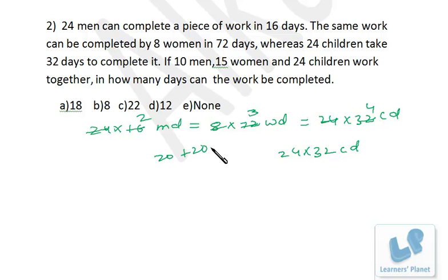So 24 plus 40 equals 64 children are there, right? Now the work is of 24 into 32 children-days, and 64 children are there, so it will take 12 days. Okay, as simple as that. No need to mug up any sort of formula, right?